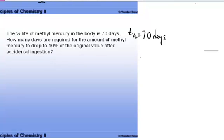The half-life of methylmercury in the body is 70 days. The question is how many days are required for the amount of methylmercury to drop to 10%. 70 days would be 50%. We want to know 10%, after accidental ingestion.